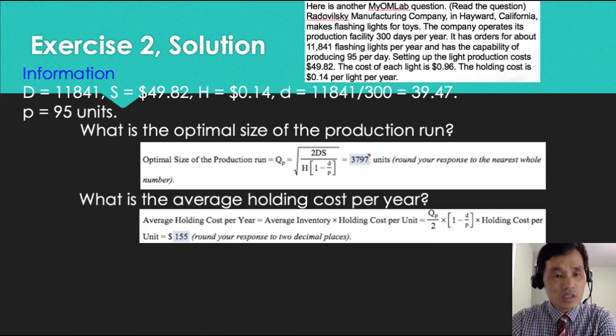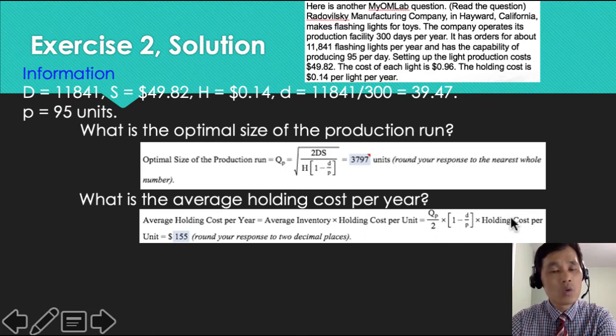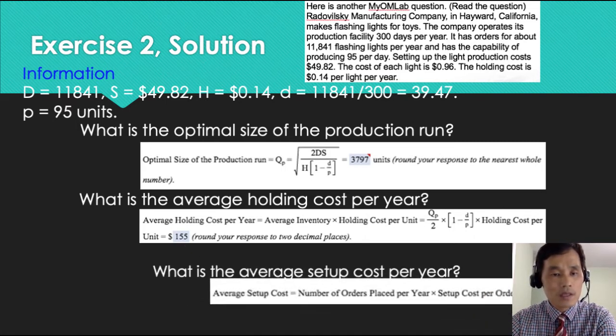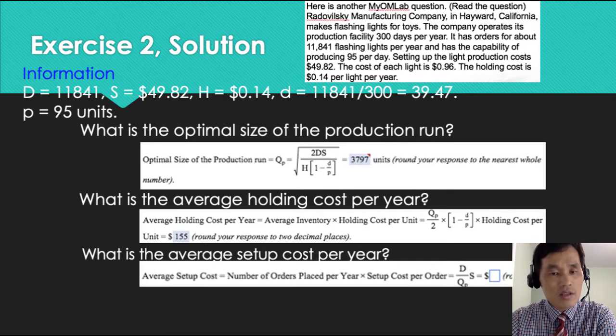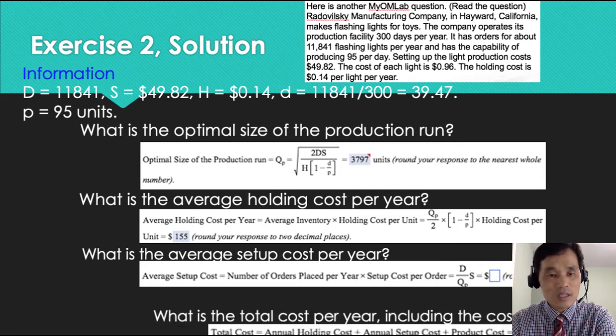Second question is, what is the average holding cost per year? The holding cost is Q over 2 times H, right? That's the normal one. But in production run, you have to include this 1 minus D over P before H. So you put that there and plug those numbers in and calculate, and you will find 155. What about the average setup costs? Every setup cost does not change. Just use QP that we found, 3,797, and then you will be able to find the answer.